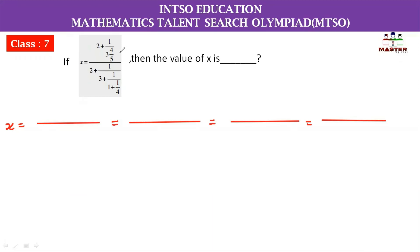If x is equal to 2 plus 1 whole divided by 3, 4 by 5, whole divided by 2 plus 1 whole divided by 3 plus 1 whole divided by 1 plus 1 by 4, then find the value of x.